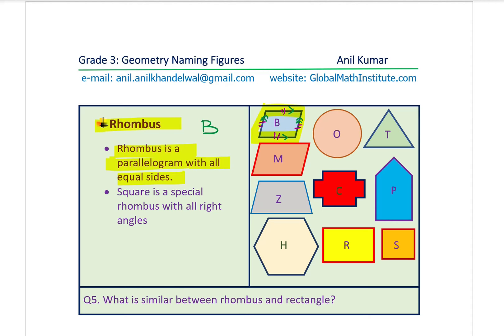A square is a special rhombus with all 90-degree angles. It also has equal sides, and it matches the definition: a four-sided figure with two pairs of parallel sides and all equal sides. Question number five: what is similar between the rhombus and the rectangle? Think about it and answer.